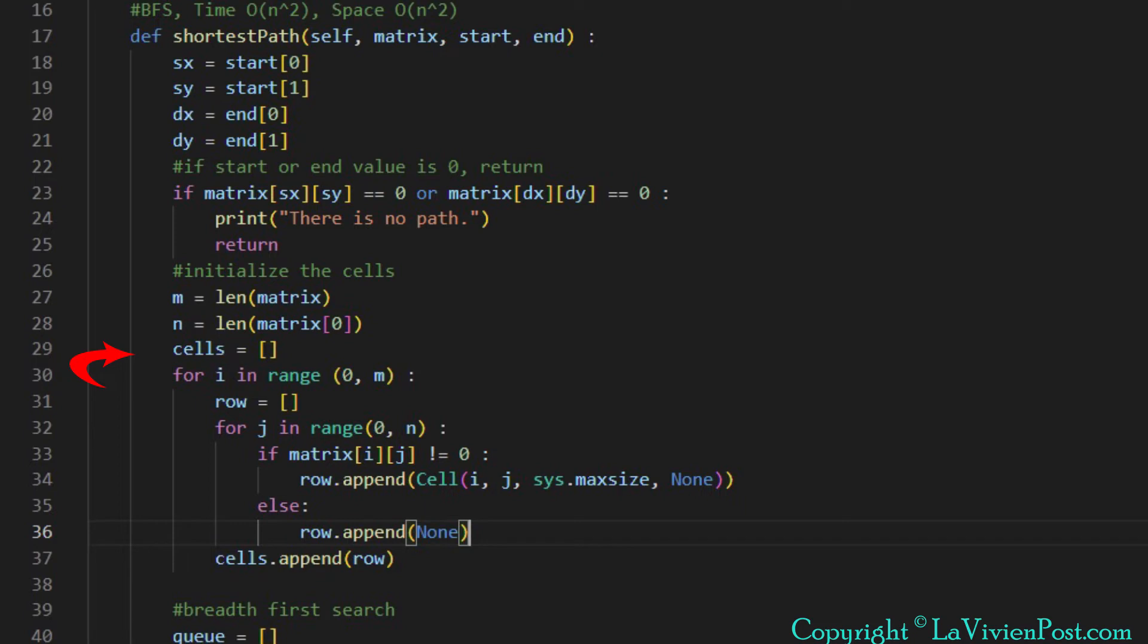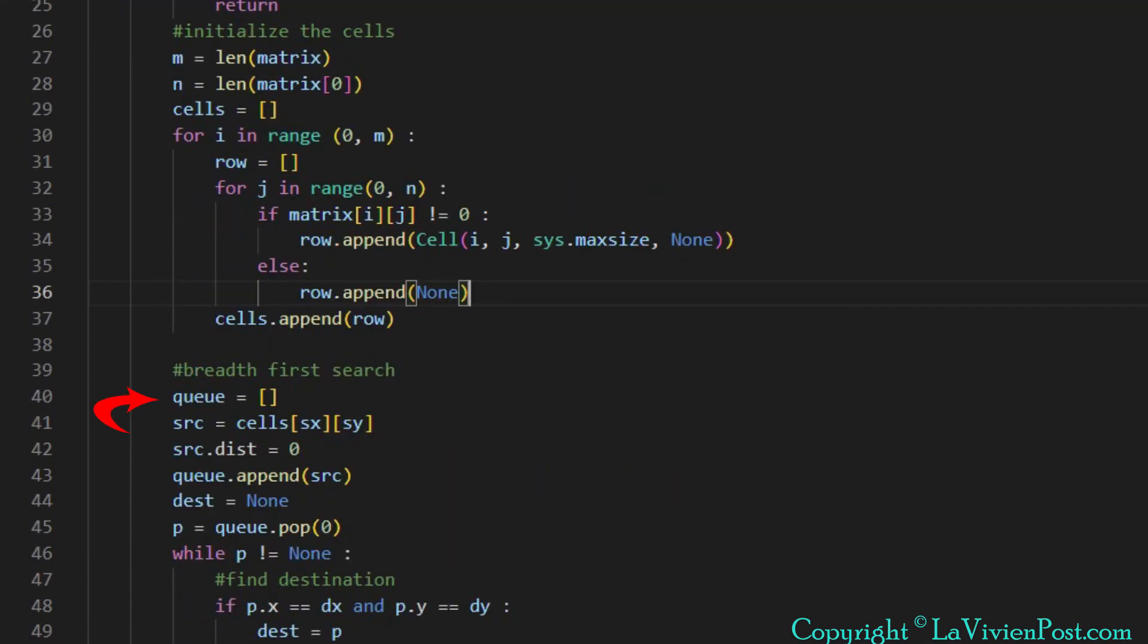We initialize each cell with row number, column number. The distance initial value is integer's max value, and prev is null. Now we create an empty queue and enqueue the source cell. It has a distance of 0. We also define two variables of type cell.